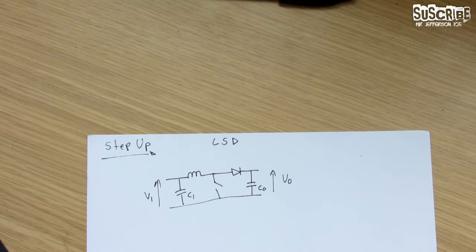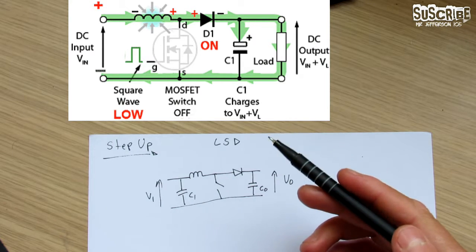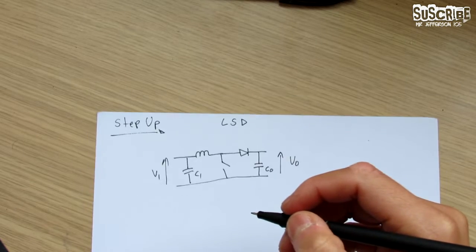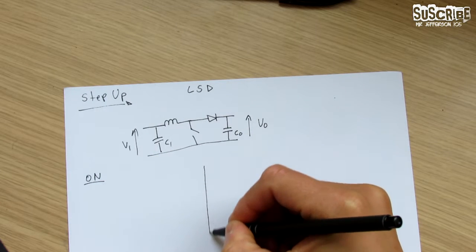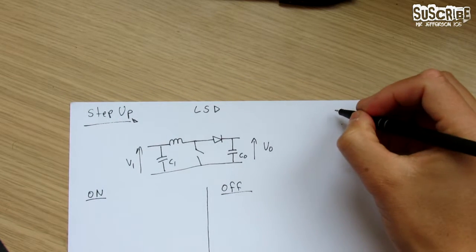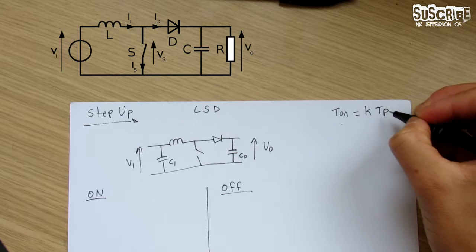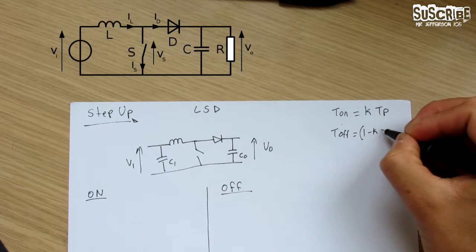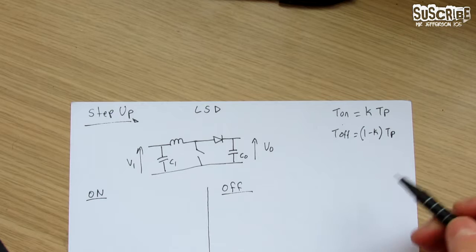The switch here represents the transistor that you can use — so a MOSFET. In order to come up with the derivation of this circuit we need the on time and the off time. The time it takes for the transistor to be on equals the duty ratio times the time period, and the time for the transistor to be off equals one minus the duty ratio times T_p, the time period. These equations are very important.